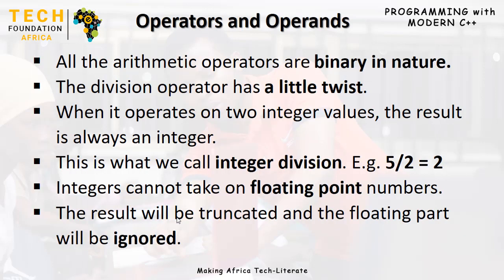All arithmetic operators are binary in nature. The division operator however has a little twist: when it operates on two integers, the result is always an integer — this is called integer division. For example, you would expect 5 divided by 2 to give 2.5, but in C++ it gives 2. This is because integers cannot take on floating point numbers, so the result is truncated and the floating part is ignored.